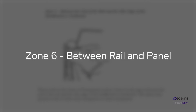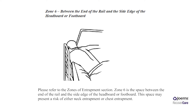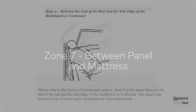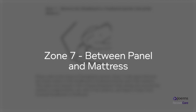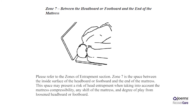Zone 6 – Between the end of the rail and the side edge of the headboard or footboard. Zone 6 is the space between the end of the rail and the side edge of the headboard or footboard. This space may present a risk of either neck entrapment or chest entrapment. Zone 7 – Between the headboard or footboard and the end of the mattress. This space may present a risk of head entrapment when taking into account mattress compressibility, any shift of the mattress, and degree of play from a loosened headboard or footboard.